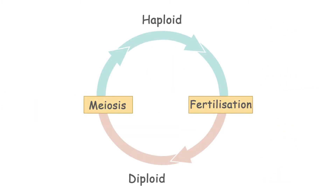To recap: we start at the gametophyte stage, the haploid stage. Through mitosis, haploid gametes are released into the environment where fertilisation takes place. This produces the sporophyte stage, the diploid stage. Following this stage, meiosis of a diploid cell results in four new haploid cells to begin the gametophyte stage again.